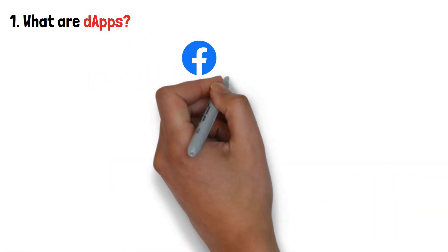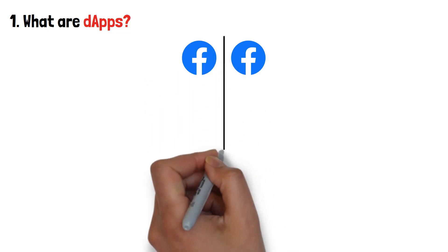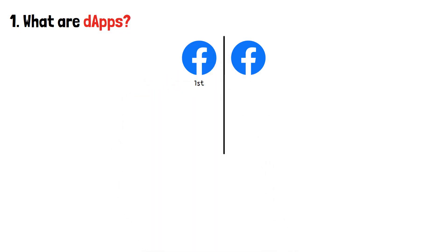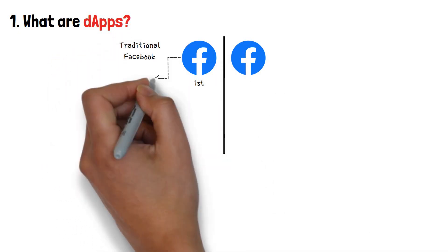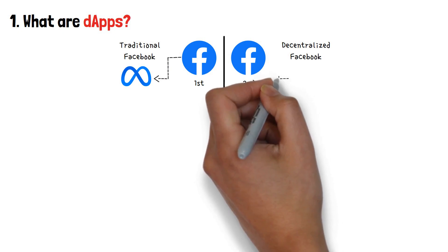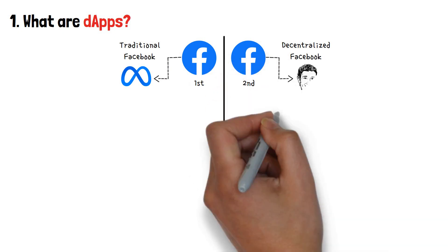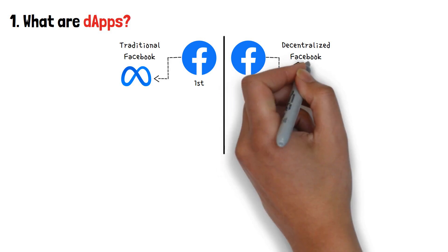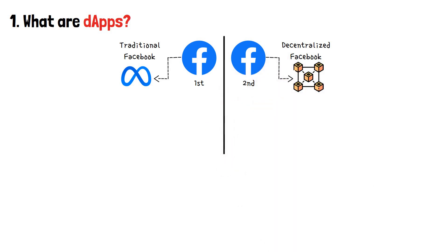Imagine that there are two online social media platforms, like Facebook. Say the first one is just like the one we have now, the traditional Facebook, owned by Meta. Now, let's call the other platform Decentralized Facebook. That's because, while it looks and interacts completely the same as Facebook, it does not belong to Mark Zuckerberg's company. Instead, it's built on the blockchain and is completely decentralized.